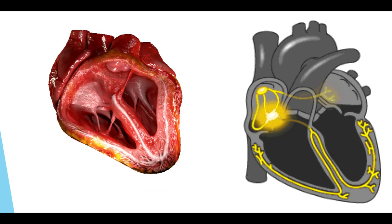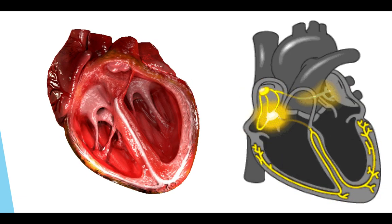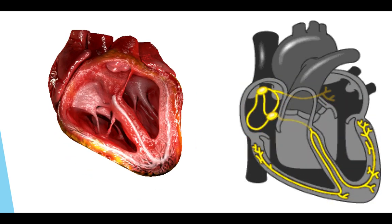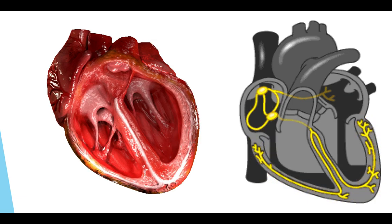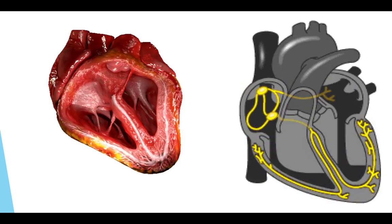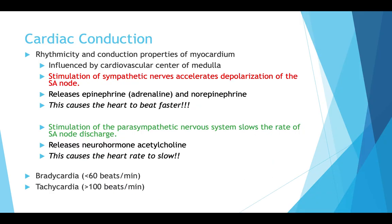On the opposite side, when the parasympathetic nervous system is stimulated, everything slows down — the discharge of the SA node slows down via the release of acetylcholine. This should all be a refresher from previous courses, so we won't spend too much time here. We're diving straight into deeper lectures on strength training.